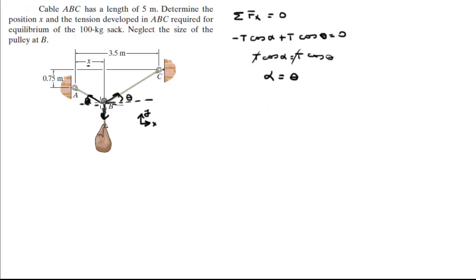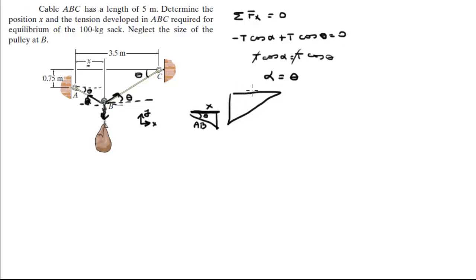So let's say this is theta also — they are both theta. If this angle is theta, this one is also theta, and this one is also theta. Let me redraw some triangles. This small triangle that A forms with the vertical line and hypotenuse AB has length X at the base, angle theta, and hypotenuse AB. This bigger triangle has a base of 3.5 minus X — since the whole length is 3.5 and this portion is X — with hypotenuse BC and angle theta as well.